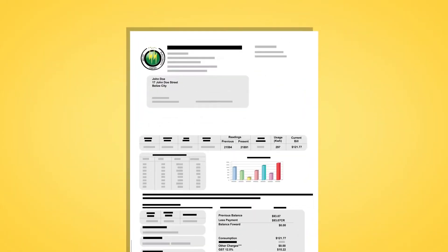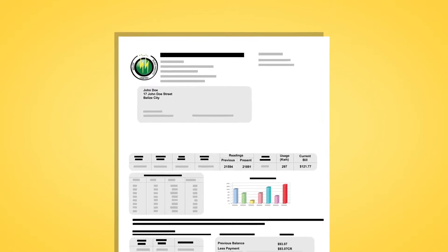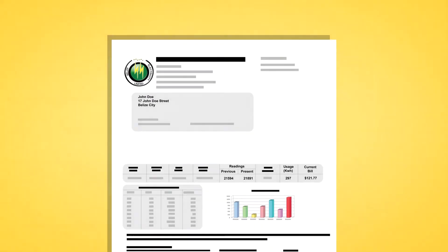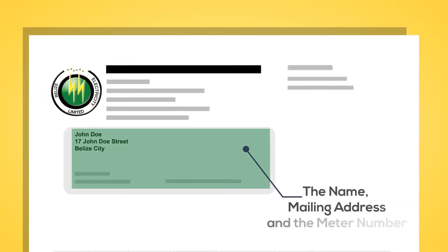Let's look at how to read your monthly electricity bill. The name, mailing address and the meter number of the account holder can be found on the cover and inside of your bill.